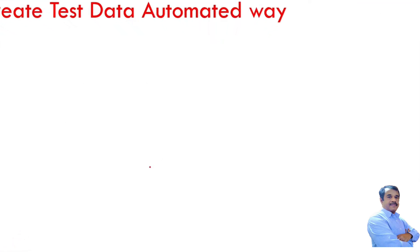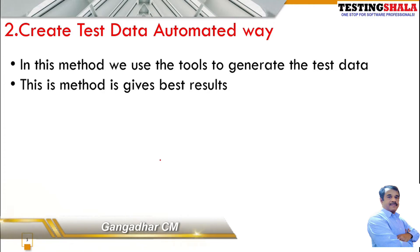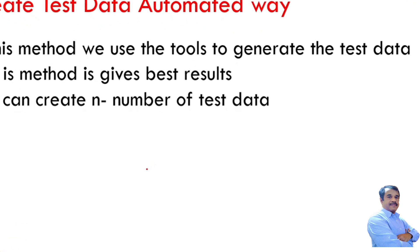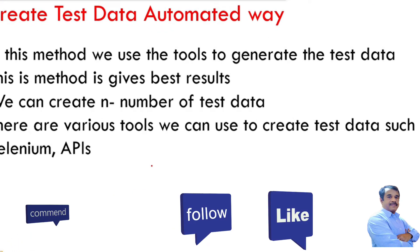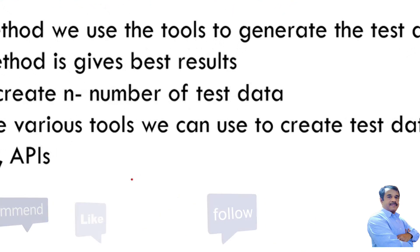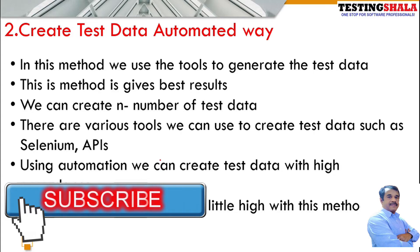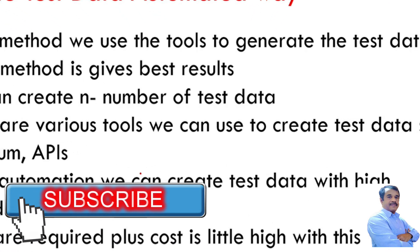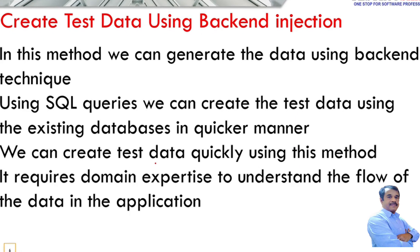The second method is creating test data in a completely automated way using tools. This method gives the best results — when you automate things, you get better results with fewer errors, and you can create as many test data records as needed. Various tools are available in the market, such as Selenium or other APIs, to create test data. However, this automated approach requires a huge skill set and the cost is also a little higher compared to the manual method.